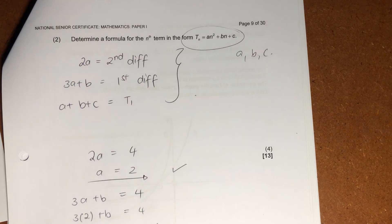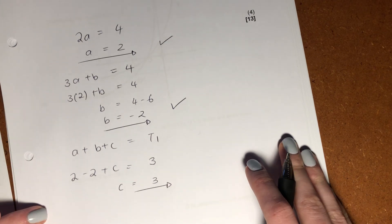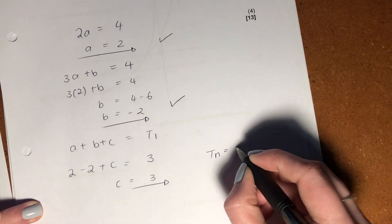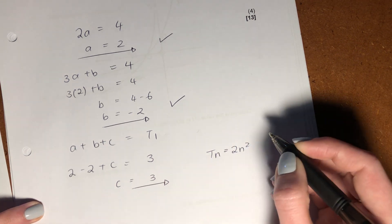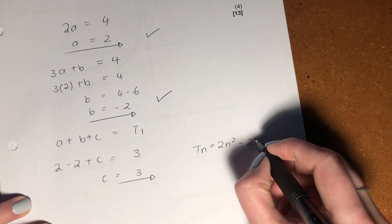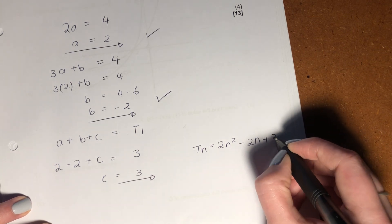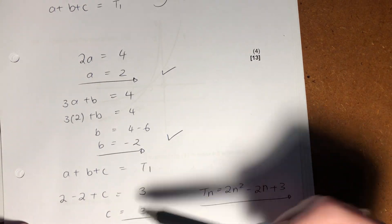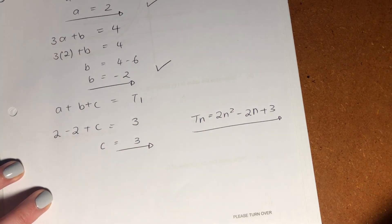Okay? But we're not done, because it said, please write the formula. So, we've found A, B, and C, but we haven't written the formula. The formula then becomes 2N^2 minus 2N plus 3. Literally, all I've done is subbed in my A, B, and C values to get my formula.